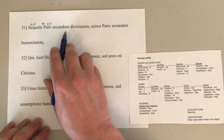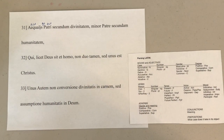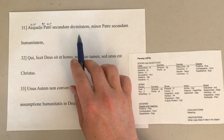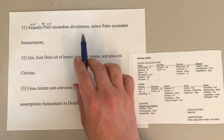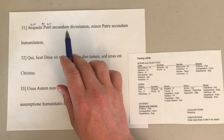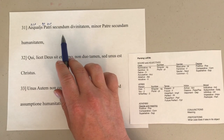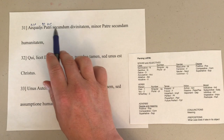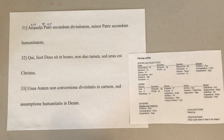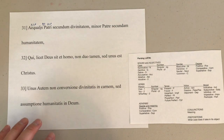And then secundum — normally we would look at this and we'd say an adjective must be modifying divinitatem. But then you need to remember that divinitatem is one of the -tas third declension feminine nouns, so secundum is the wrong case — well, it's the right case, but it's the wrong gender for that. And then patri — secundum is definitely the wrong case for both patri and aequalus — so something else must be going on. What we have is secundum is actually a preposition in this case.